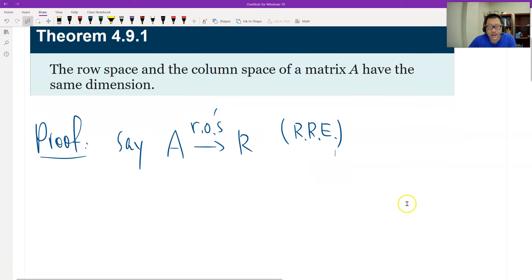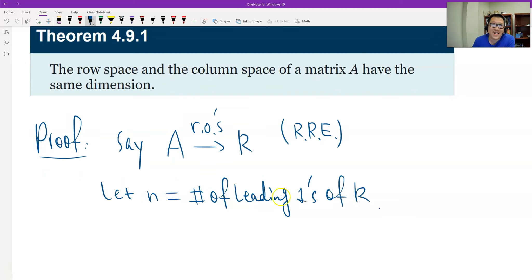And let me set up n is the number of leading ones. And then we can prove that this number of the leading ones should be the dimension of the row space and the column space of the matrix A.